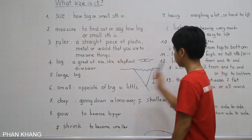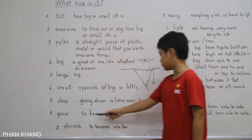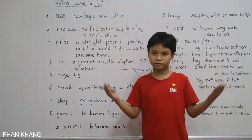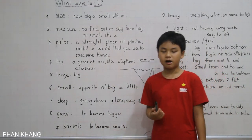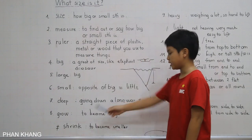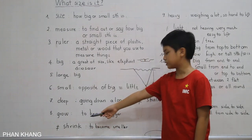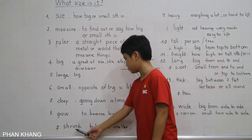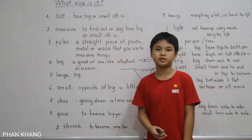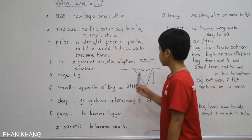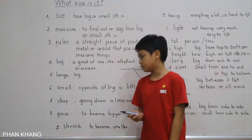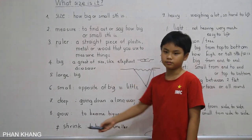Next is grow. Grow means to become bigger. For example, we grow up every day — we say 'I grow up every day by eating.' Shrink means to become smaller, the opposite of growing. There are some things that scientists use to shrink things down.